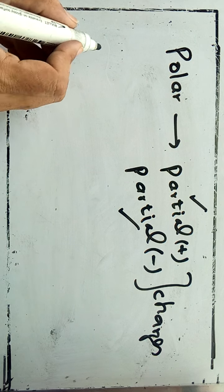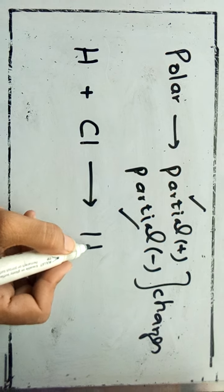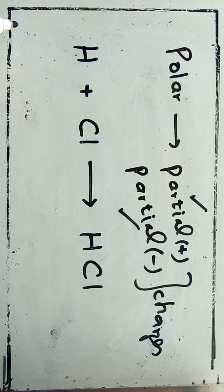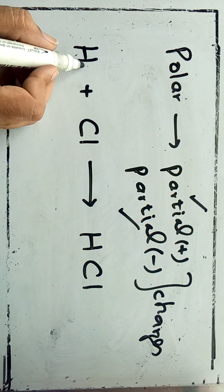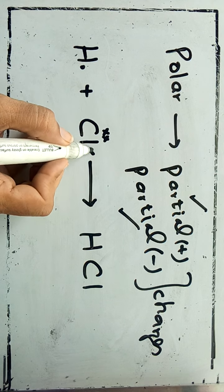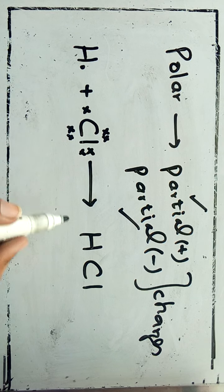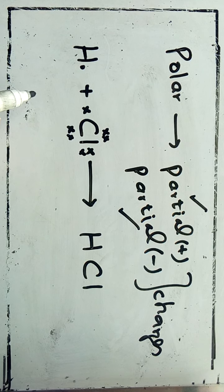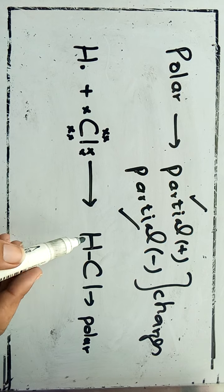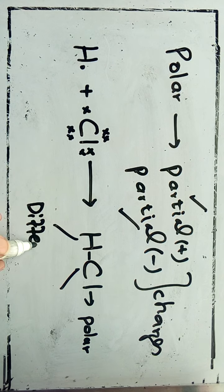How does this happen? We have hydrogen plus chlorine — this forms hydrogen chloride. The hydrogen atom has only one electron, and the chlorine atom has seven electrons in its valence shell. They combine with each other by a covalent bond and form HCl. This bond proves to be polar because the covalent bond is formed between two different atoms.